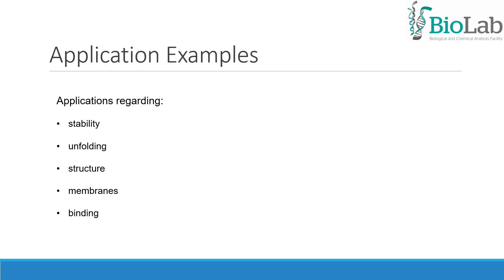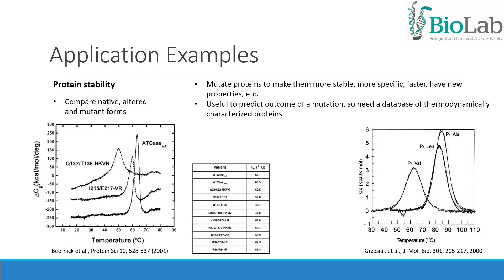I will now give some application examples regarding stability, unfolding, structured membranes and binding. Regarding stability, you can compare native, altered and mutant forms of proteins. With NanoDSC, you can determine the midpoint of the thermal unfolding, also known as melting temperature, of native and mutant proteins and characterize thermodynamically the effect of mutations.